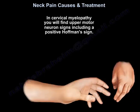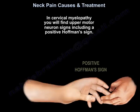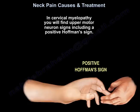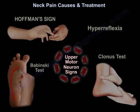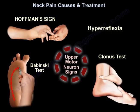In cervical myelopathy, you will find upper motor neuron signs including a positive Hoffmann sign. This is how you elicit a positive Hoffmann sign. Other upper motor neuron signs include hyperreflexia, a positive Babinski test, and clonus.